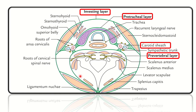The prevertebral fascia covers the vertebral column and the muscles attached to the cervical vertebrae. So the deep fascia of the neck is divided into four layers: the investing layer, which encircles the whole neck; the pretracheal fascia, which lies in front of the trachea and encircles the thyroid gland; the carotid sheath, encircling the carotid vessels and vagus nerve; and the prevertebral fascia, covering the cervical vertebrae and attached muscles.